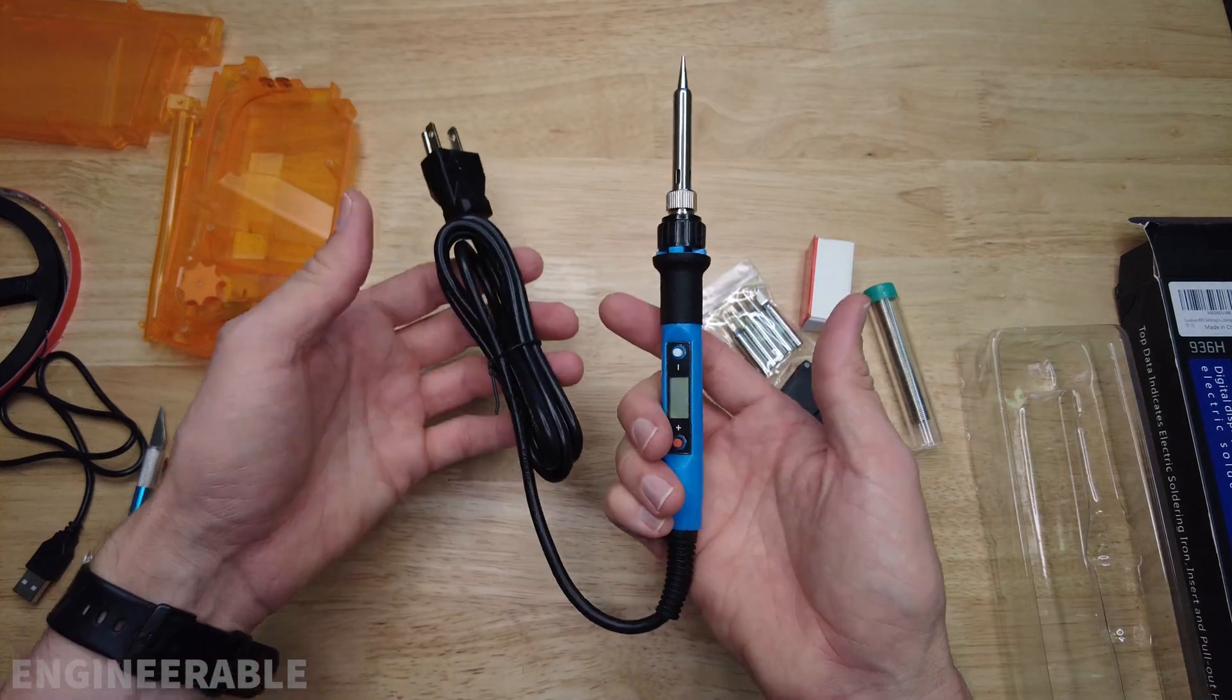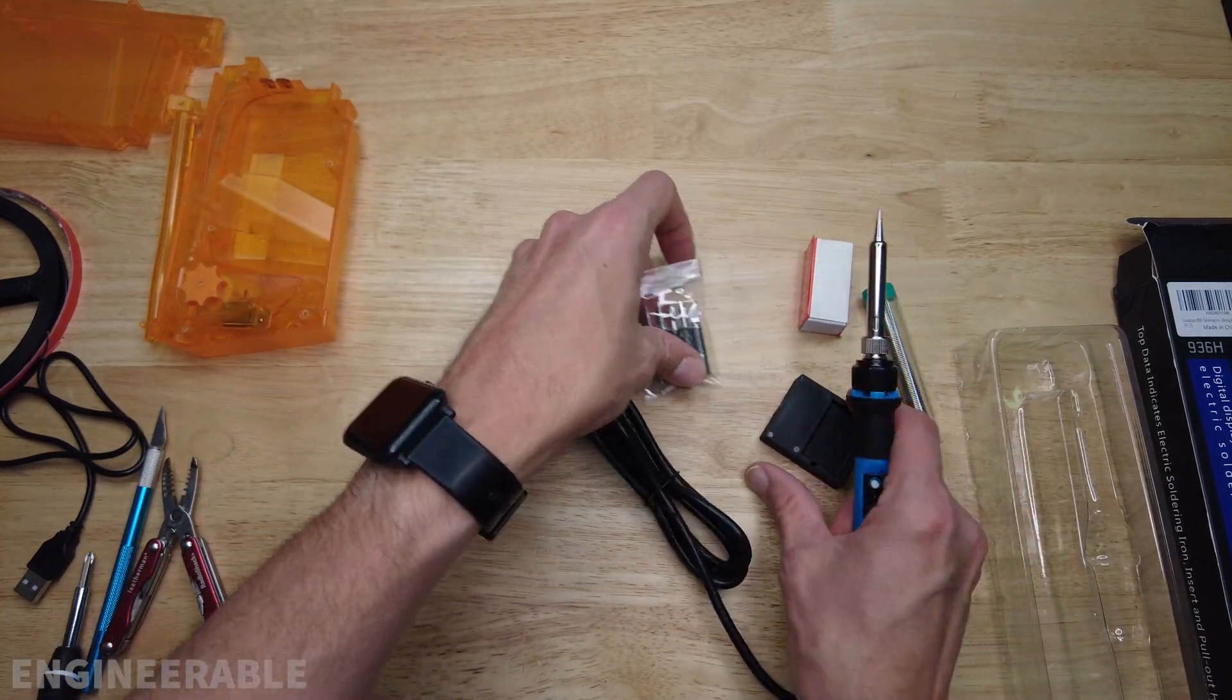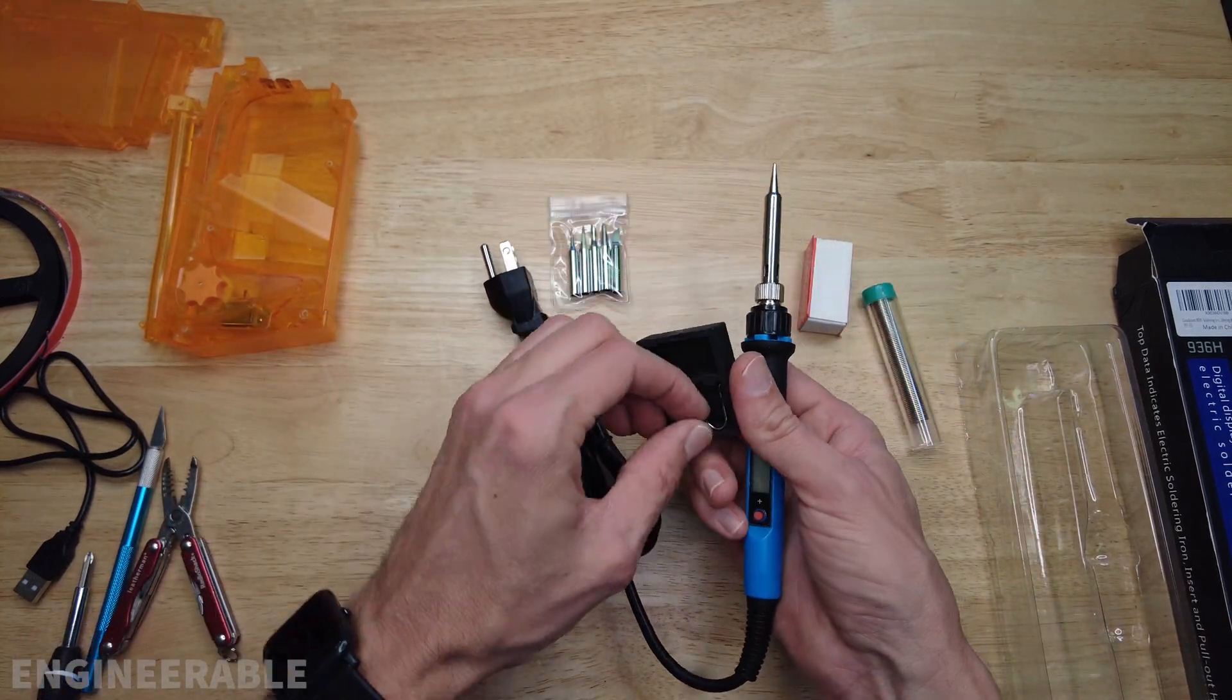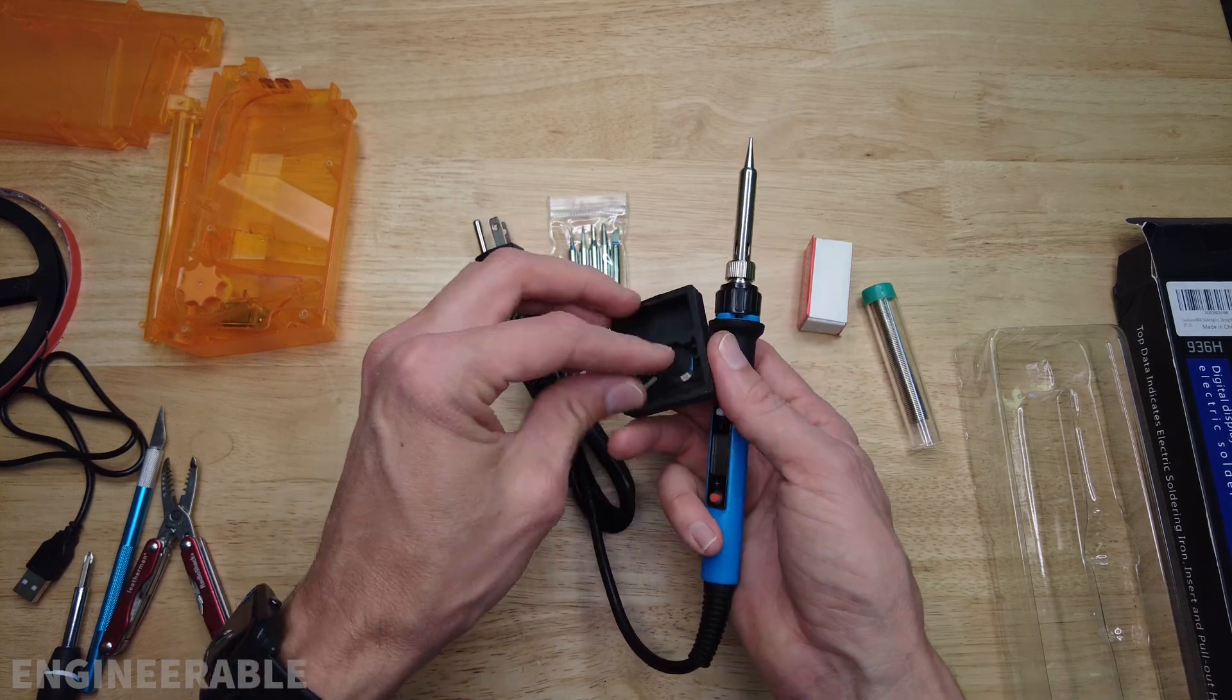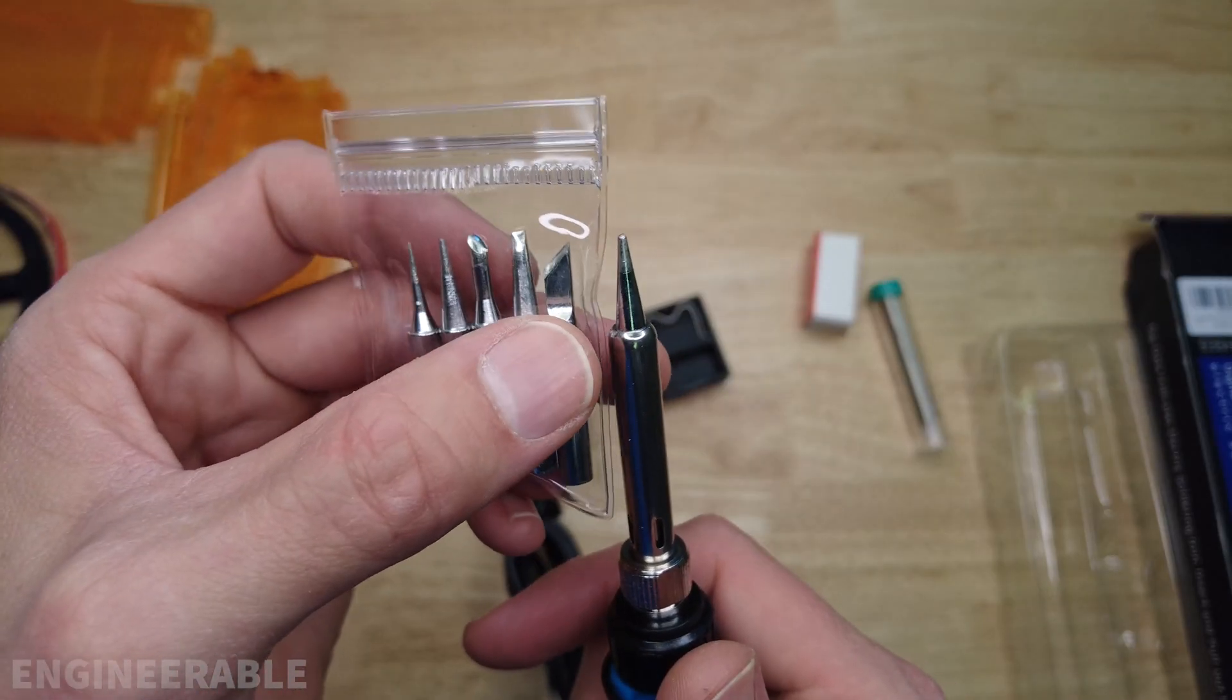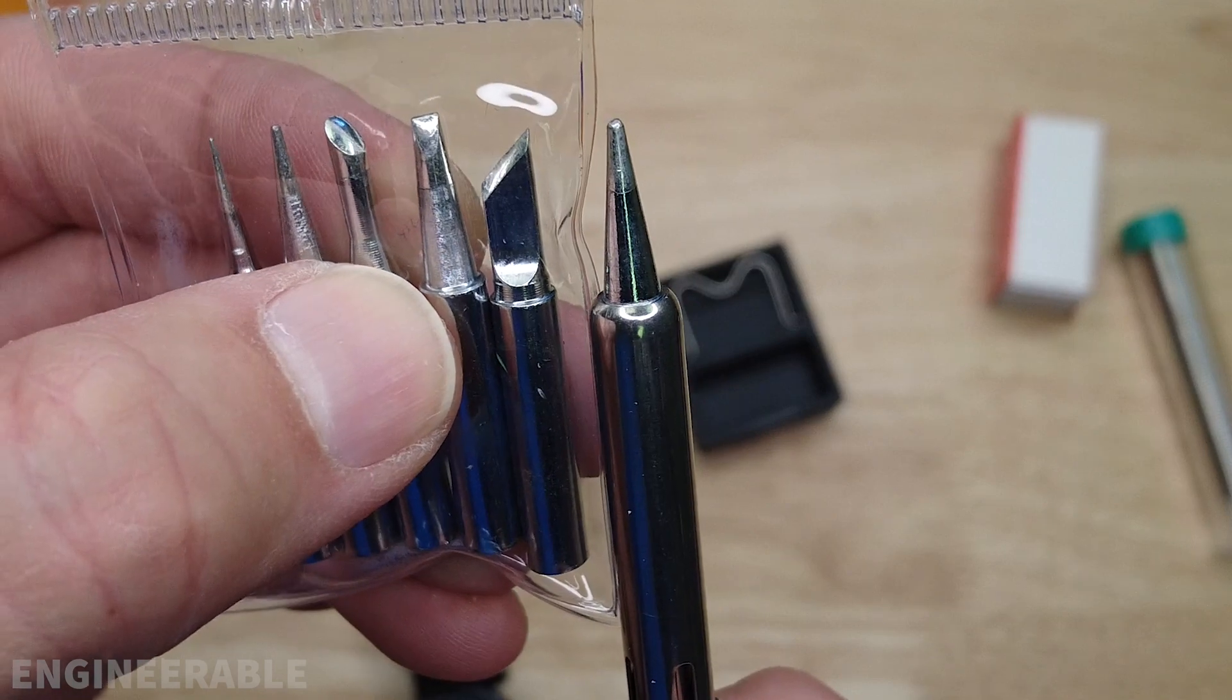In addition to the soldering iron itself, it actually comes with a bunch of stuff which is quite a bit for $14. There's an assortment of tips in addition to the one already in the soldering iron. You get six different tips.